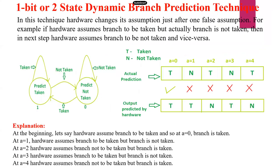So, one-bit or two-state dynamic branch prediction technique. Here we use only one bit, either zero or one — that is two states. One state is called predict taken, and the other state is called predict not taken. In this technique, the hardware changes its assumption just after one false assumption. For example, if hardware assumes a branch to be taken, but actually the branch is not taken, then in the next step, hardware assumes that branch to be not taken, and vice versa.